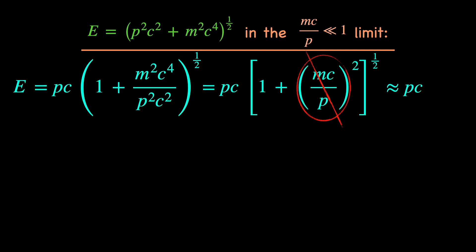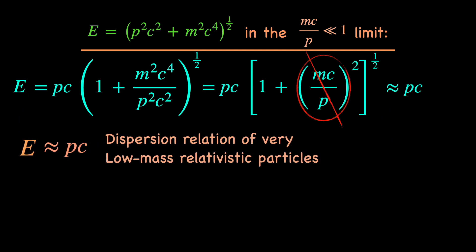Thus, the energy momentum relation for a very low mass particle moving at a highly relativistic speed becomes E approximately equal to p times c.